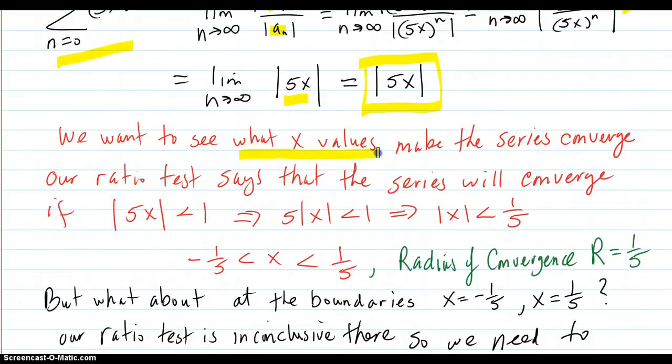We want to see what x values make the series converge. Our ratio test says that the series will converge if that result is less than 1. So we solve that and get that our radius of convergence is 1/5. And here's our interval of convergence, at least.